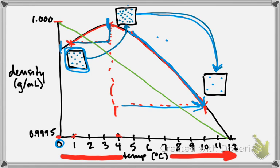We'd expect density to just keep dropping and dropping as particles get more energetic, move faster, and get farther from their neighbors. But you don't have to have a full explanation — you just can't fight the graph. You have to look at the data in front of you and not say 'that's not what it's supposed to be' and ignore it. What the graph says the particles are doing is that instead of getting farther from their neighbors as they get hotter, for a while they actually get closer together.